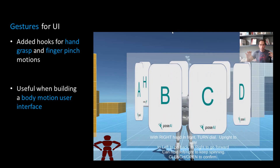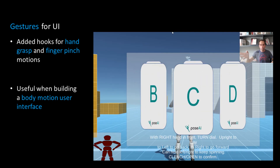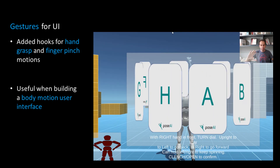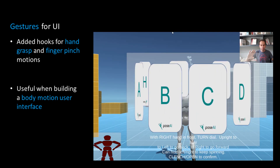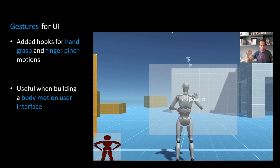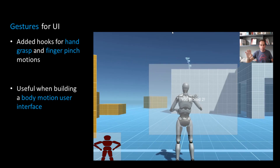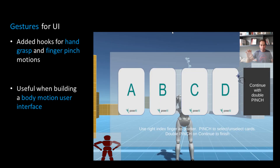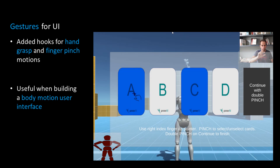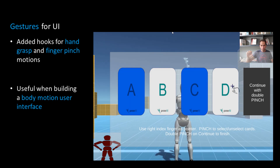Our data stream now includes hand grasp and finger pinch points, which can drive user interfaces from player motion. Here in this Unity demo, we can manipulate a carousel menu and select some cards using just hand gestures and our AI.